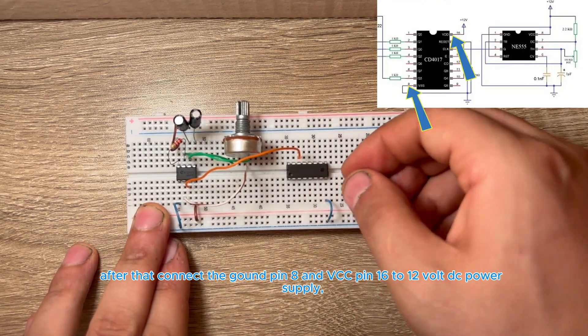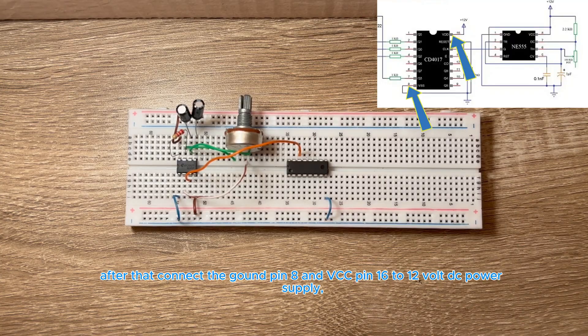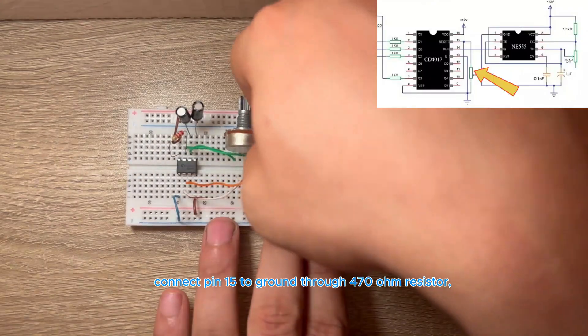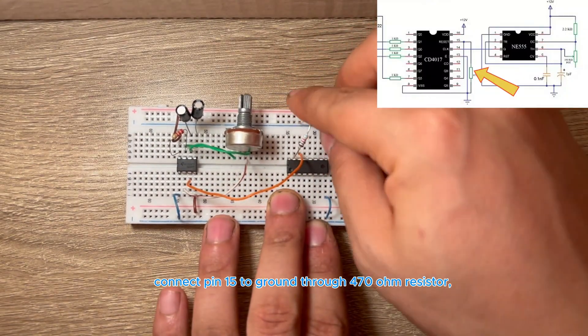After that, connect the ground pin 8 and VCC pin 16 to 12 volt DC power supply. Connect pin 15 to ground through a 470 ohm resistor.